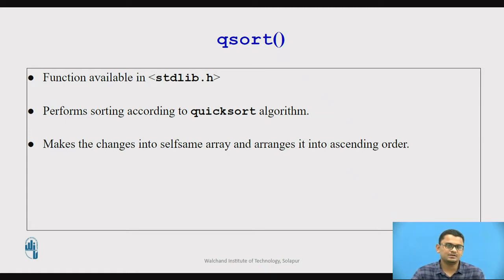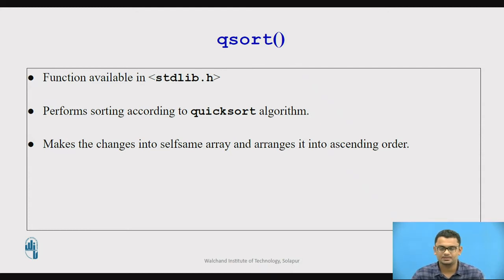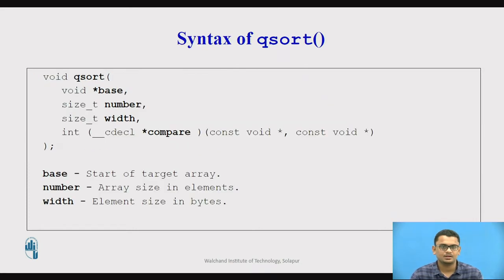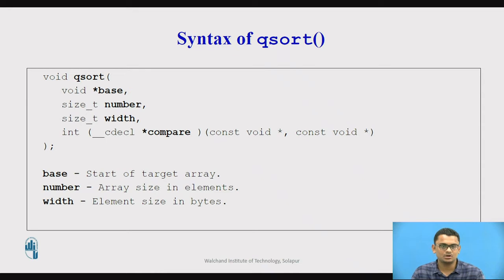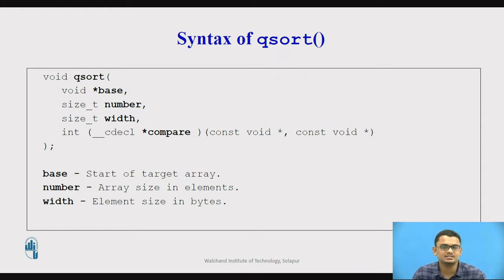One additional feature of this function is that it makes changes in the same array and arranges it into ascending order. Now, the syntax of this function takes four parameters: first, a pointer to the array we want to sort; second, the number of elements; third, the width (element size); and fourth, a routine to compare. I will explain these parameters one by one.